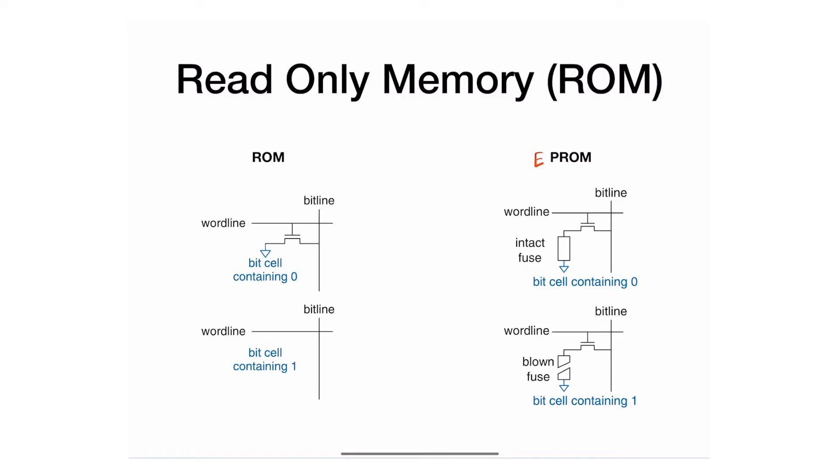Then electrically erasable programmable read-only memory was created. It's electrical because you can blow the fuse or make it back intact just electronically, and that's pretty quick. This is what we use nowadays—flash is a type of EEPROM, like what you have on your USB.